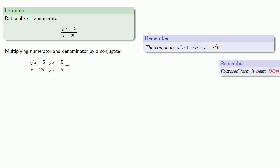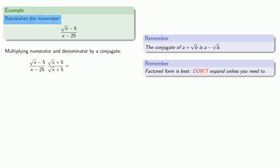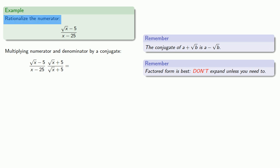And remember, factored form is best. Don't expand unless you need to. Well, in this case, we are trying to rationalize the numerator. And so if you're trying to rationalize a numerator or denominator, expand to show you've actually eliminated the square roots. Now since we don't care what happens to the denominator, we'll leave that in factored form.